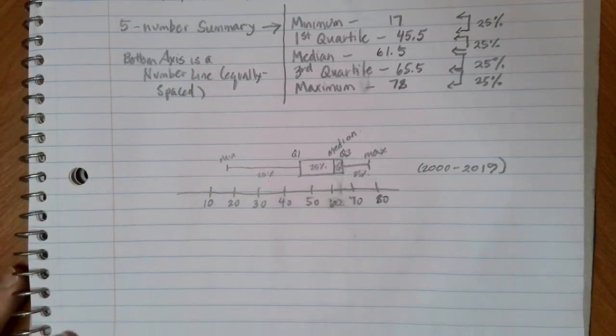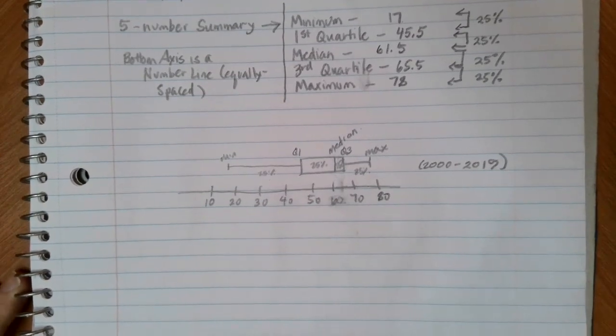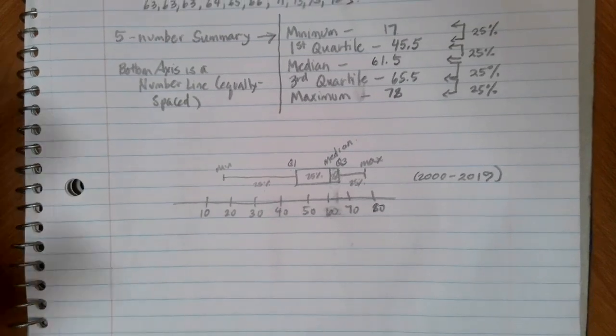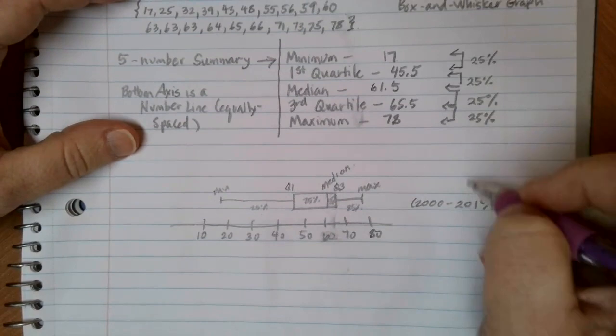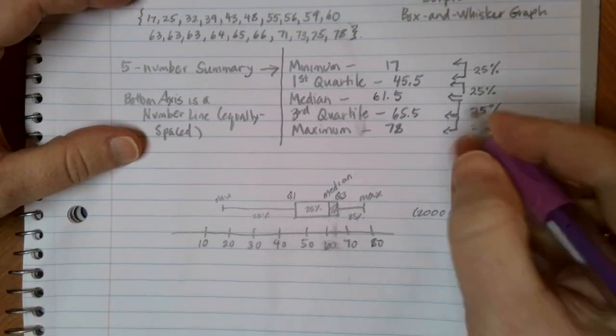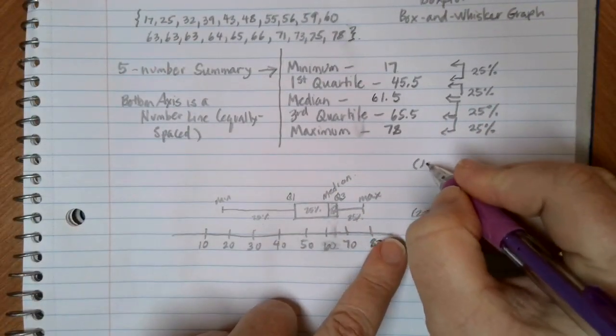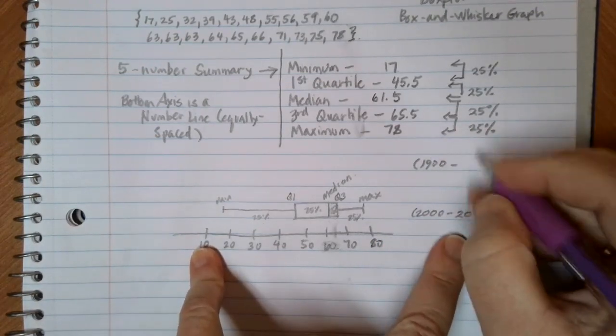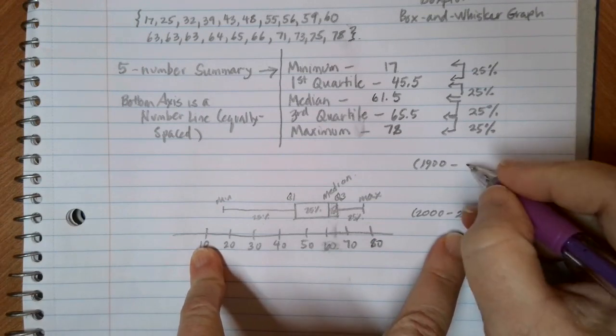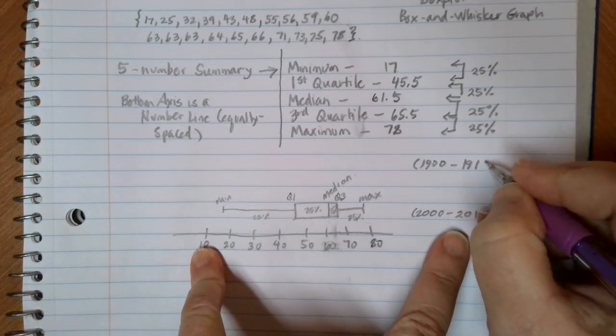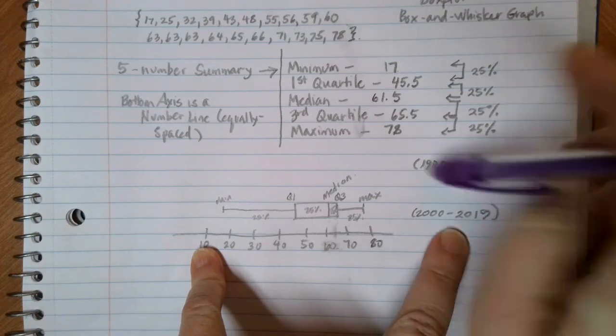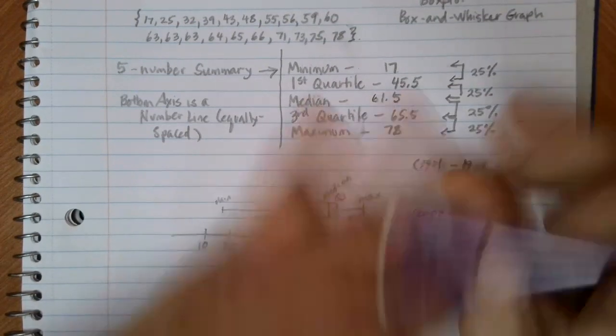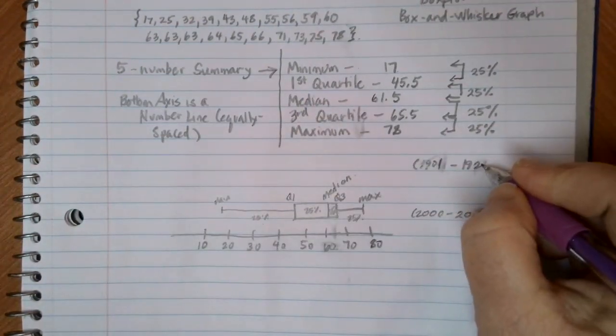Something else that we can do is make stacked box plots. And this is a really nice way to be able to compare two different data sets. And I went back and found all of, so this is all of our values from 2000 to 2019. What I'd like to do is display these with all of our data values between anybody that won Nobel Peace Prizes between 1900 and, well, technically it's 1901 was the first year they offered them up to 1920.